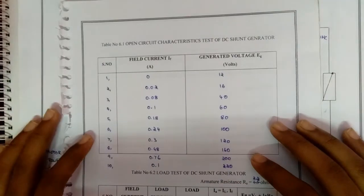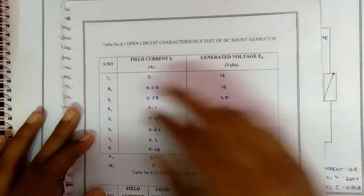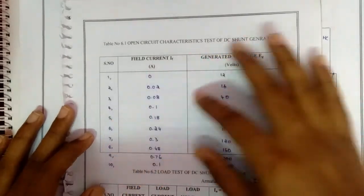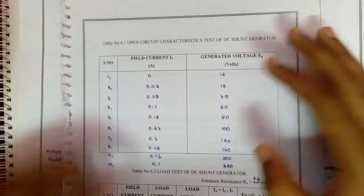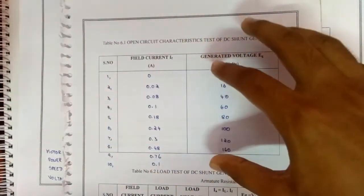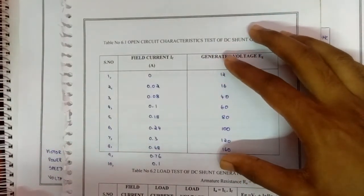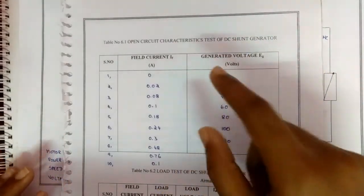For open circuit characteristics, the tabulation will be field current and generated voltage. With this reading we have to draw a graph. I will show the graph after finishing both the OCC and load test.